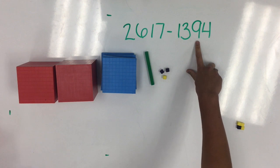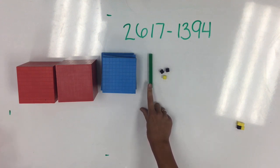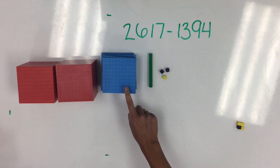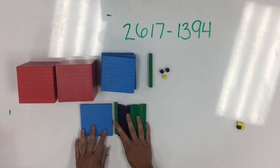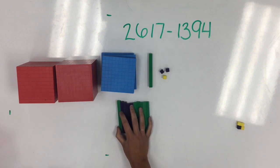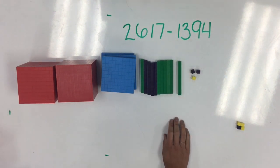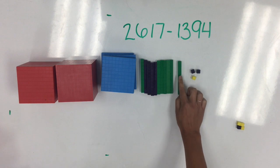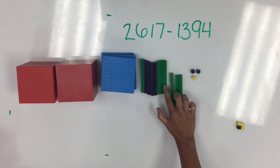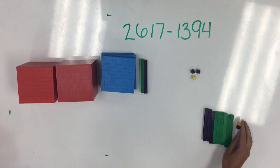Next, we move to the tens place, where it's asking me to take away 9 tens. If I look at my starting number, I only have one 10. But, because we know that inside each group of 100 there are 10 tens, I can exchange 100 for 10 tens. Remember, my number hasn't changed at all — it just looks a little bit different. Now it makes it much easier for me to take away 9 tens from my starting number: 1, 2, 3, 4, 5, 6, 7, 8, 9 tens are taken away.